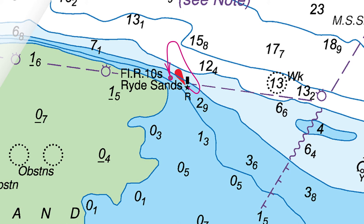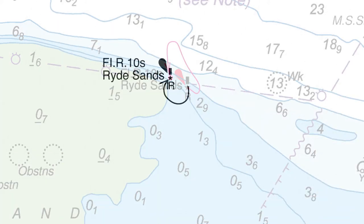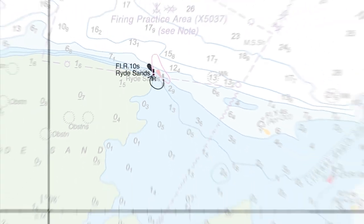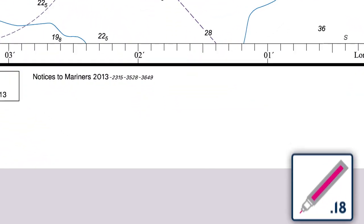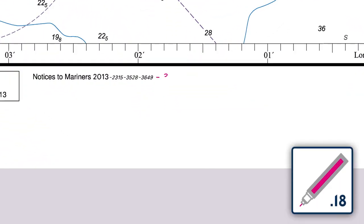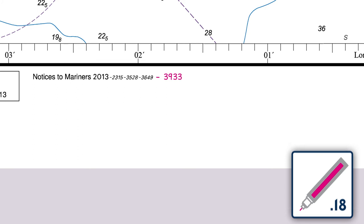Now, lay the tracing back over the chart to check that the new light position is correct. Once all the updates have been applied, add the NM update number to the chart's Notices to Mariners section in the bottom left corner of the chart.